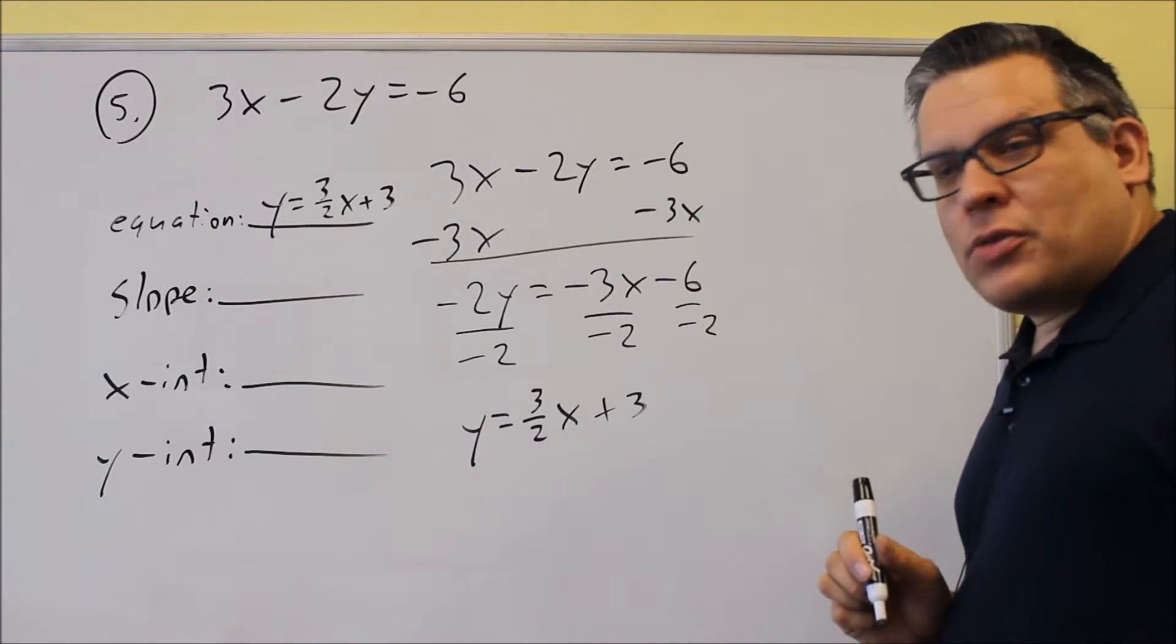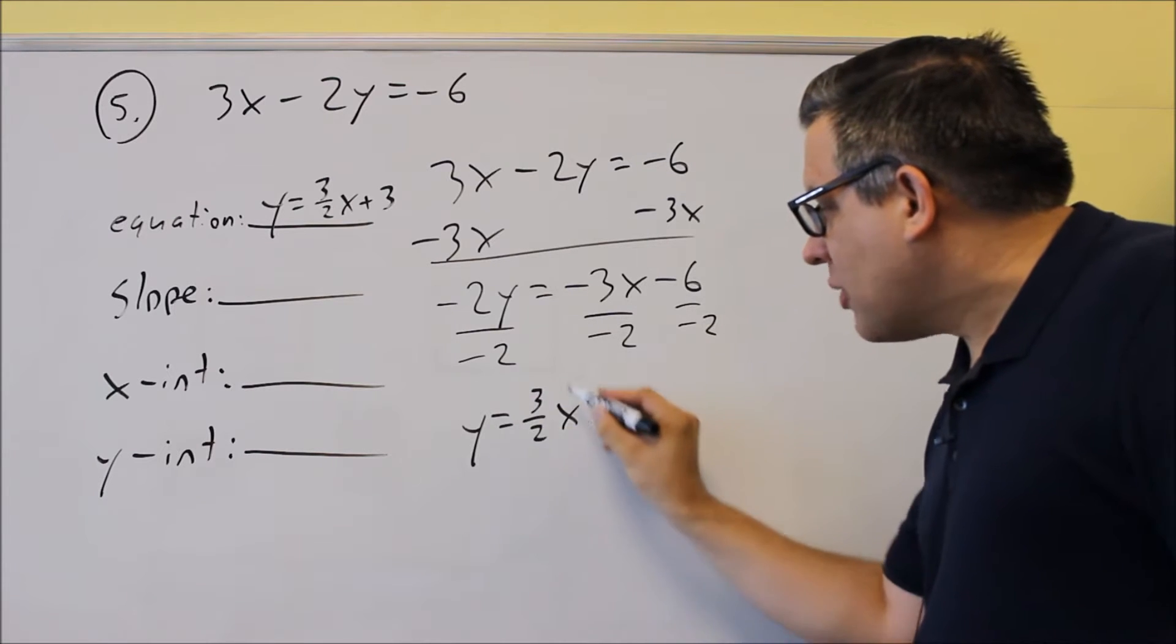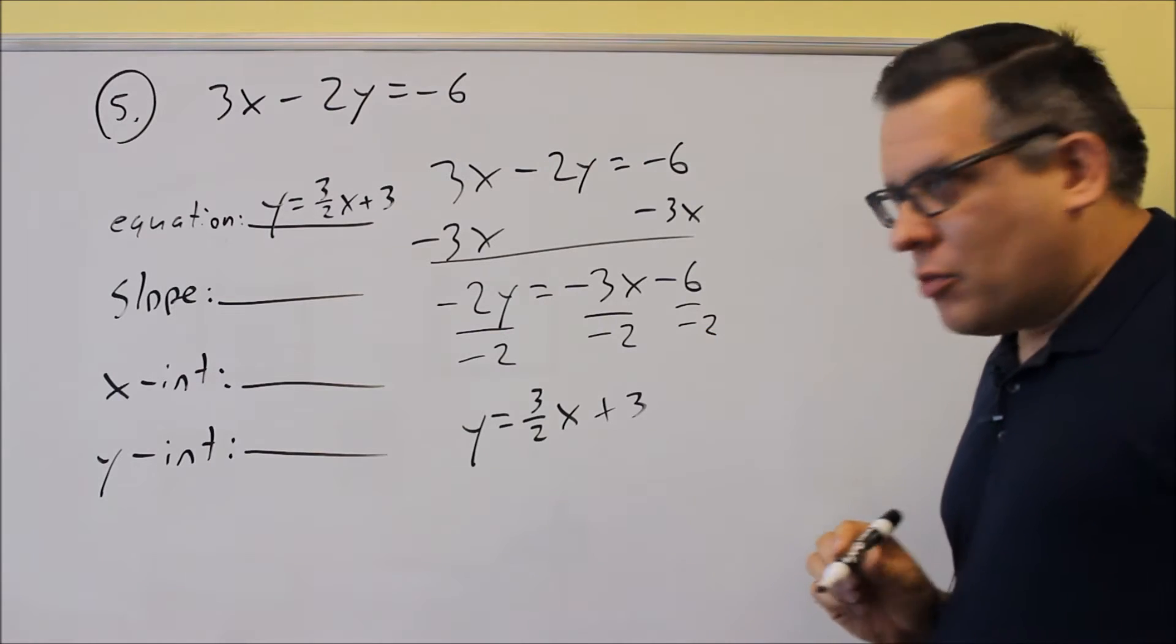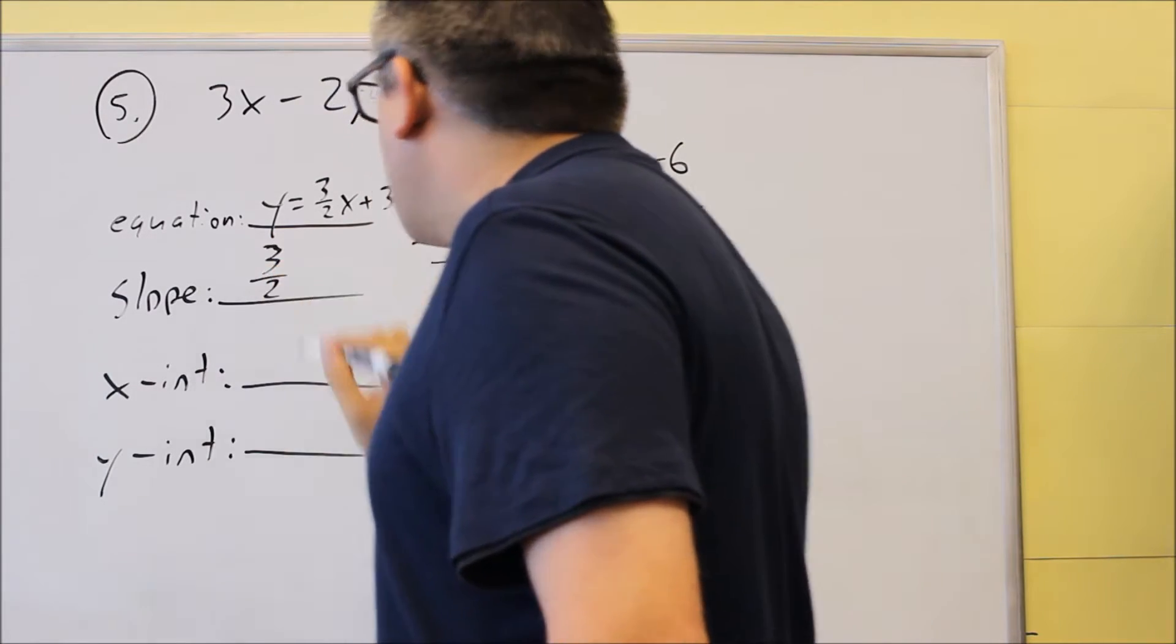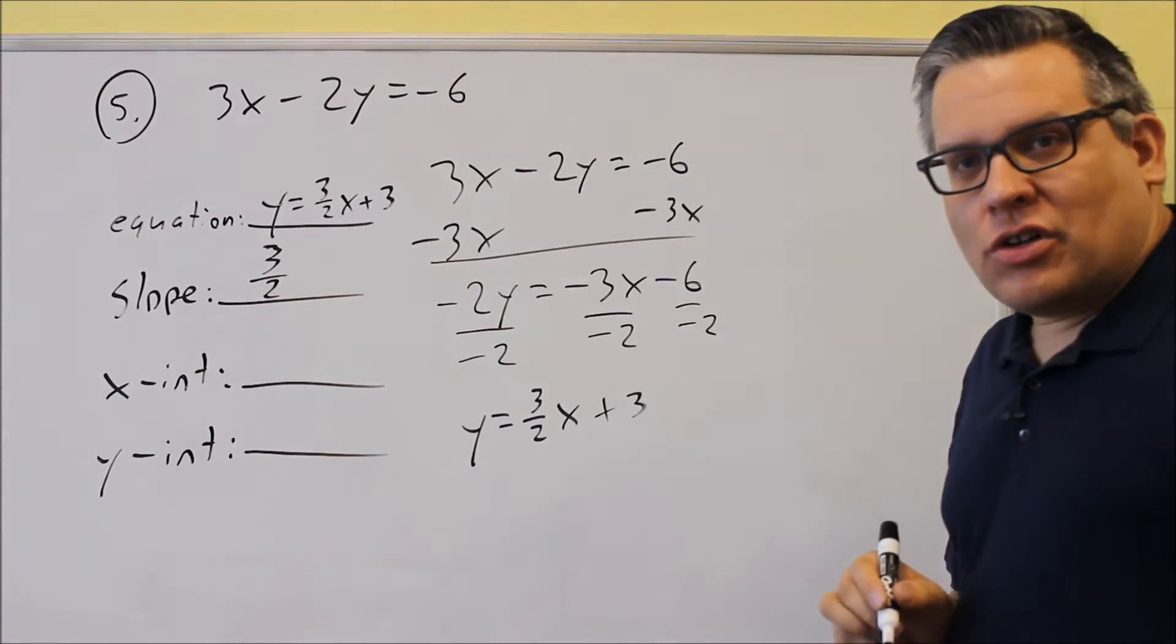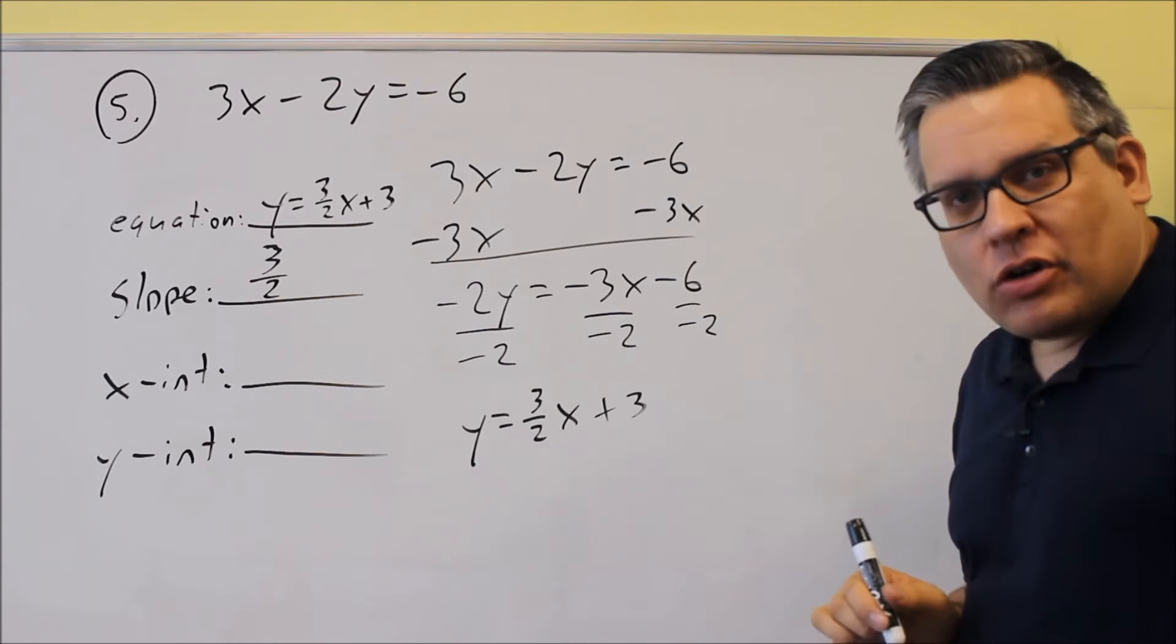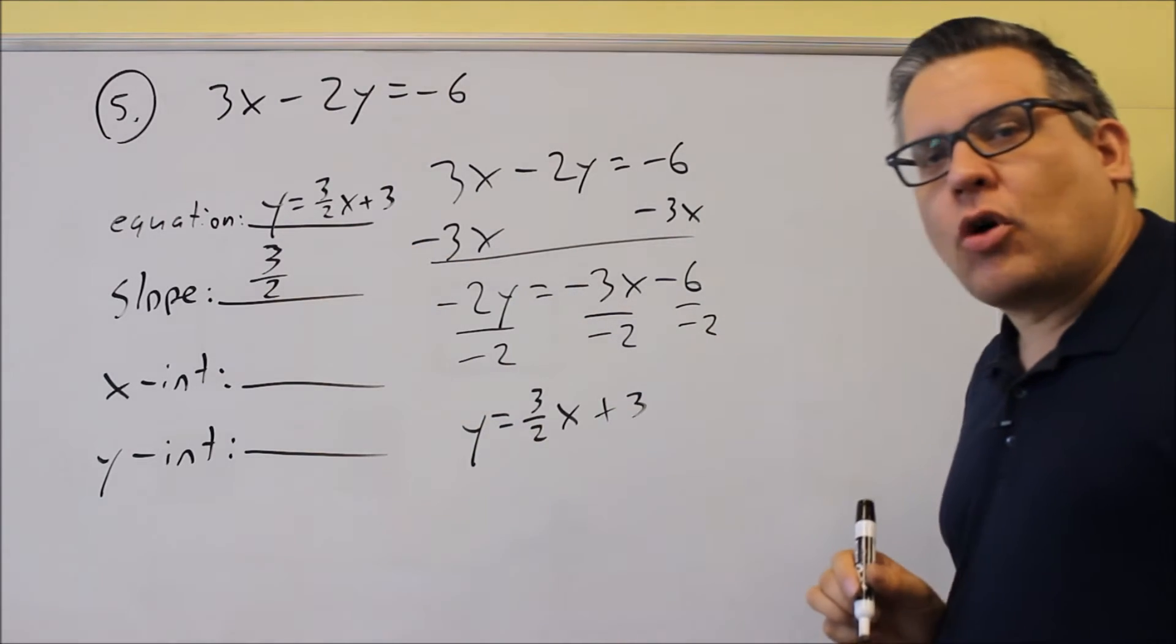Okay, now next is slope. Slope, because you have it in y equals mx plus b form, we know the slope is always going to be the number in front of the x. Now, your slope is always a number. So another common mistake that I see with this one is people will put an x next to it. That's incorrect, okay? The slope is only the number in front of the x. It does not include the x term. So make sure you just put a number only on that one.